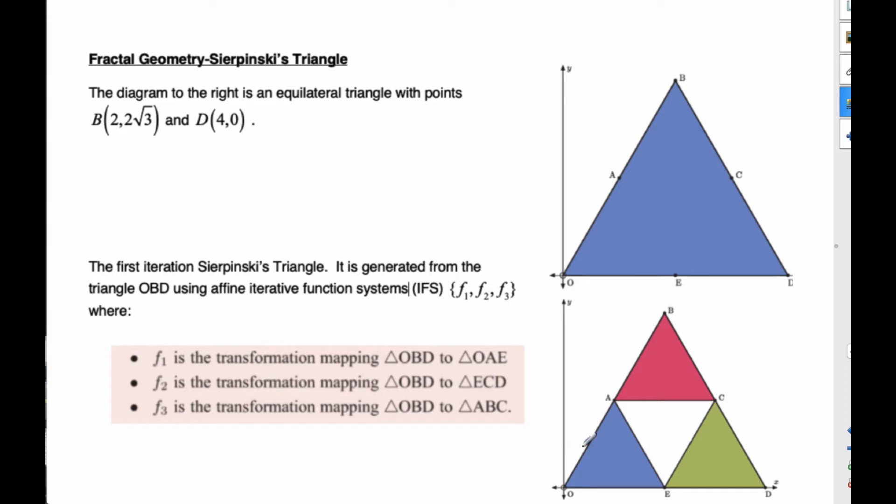F2 is a transformation of the big triangle to the green triangle here. It shrinks down the big triangle and then shifts it over to the green triangle's position. Finally, the last one goes to the red triangle here, so it shrinks down and then shifts over and up to the red position. That's what's going on, and then they take this triangle and do it again.